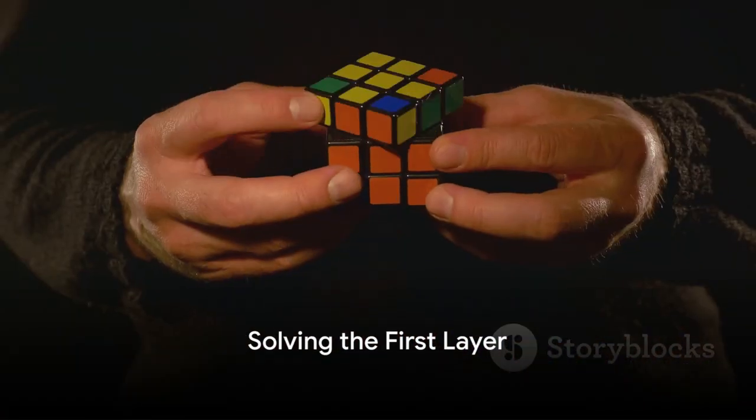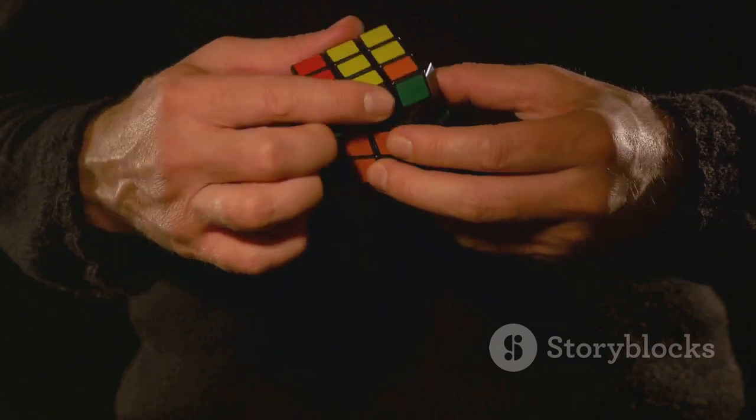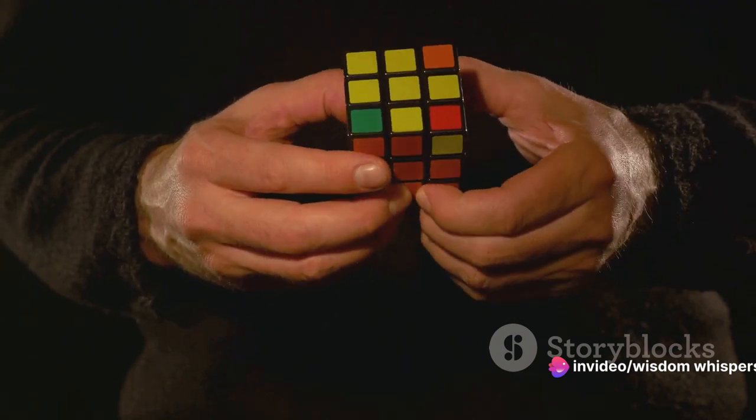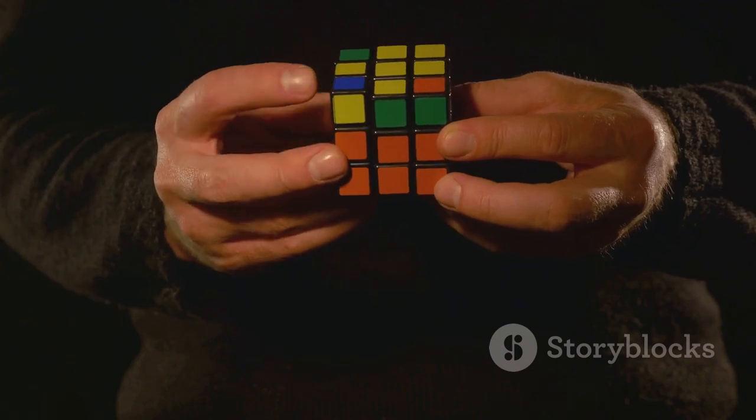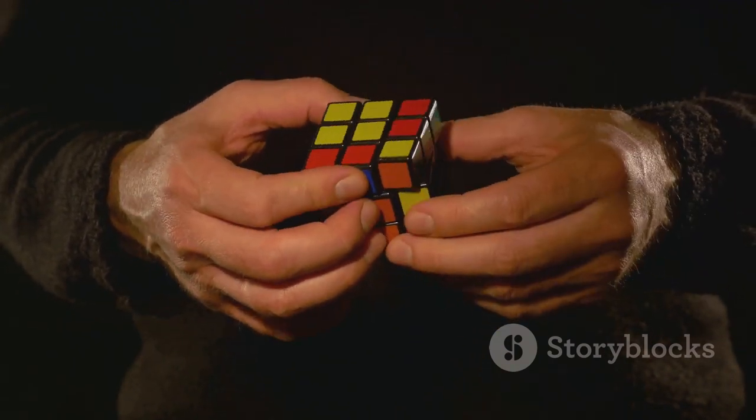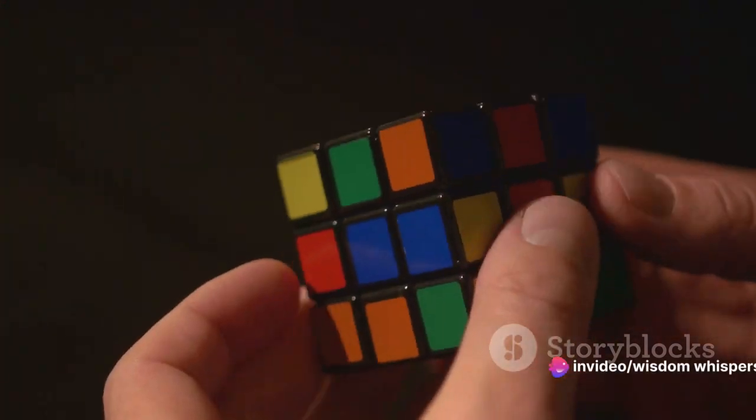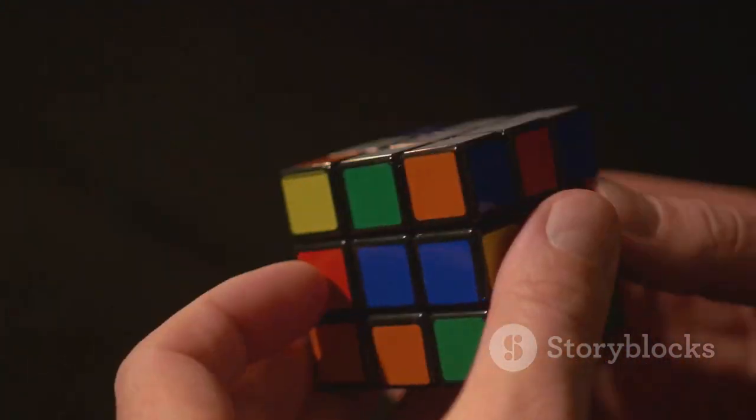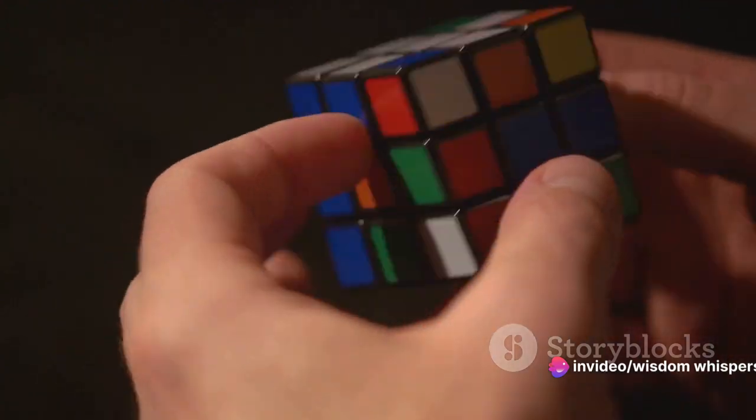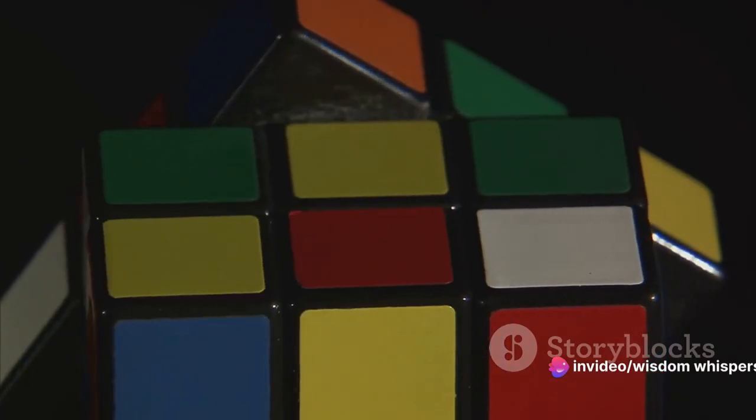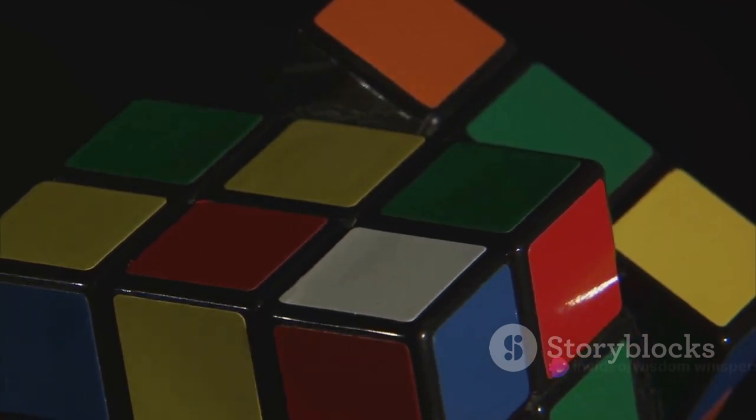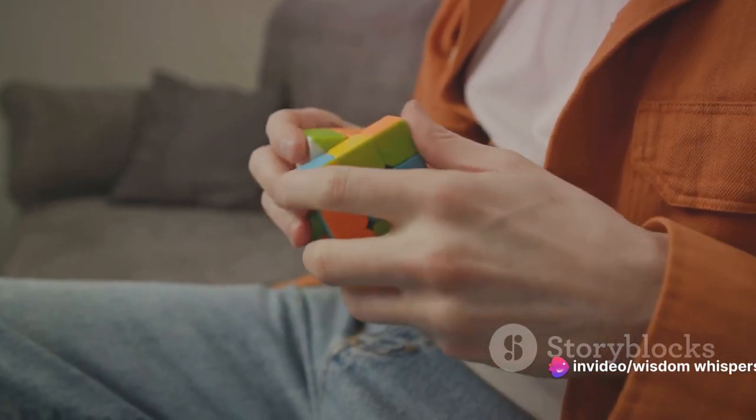Now move on to the first layer. To solve the first layer of the Rubik's Cube, it's all about positioning the corner pieces correctly. You want to create a solid uniform color on one face of the cube, with the edges matching the center colors of the surrounding faces. Start by identifying the corners on the top layer that need to be moved. These are the corner pieces with two colors that match the centers of the top layer and one adjacent face. Remember, the center pieces are your guiding stars. They never move so use them to determine where each piece should go. Once you've found a corner piece to move, rotate it to the bottom layer. Now, you're going to use a simple algorithm to move it back up to the top layer but in the correct position. The algorithm is right inverted, down inverted, right, down. Apply this algorithm until the corner piece is in the right place and oriented correctly. Repeat this process with the remaining corner pieces until the first layer is complete.